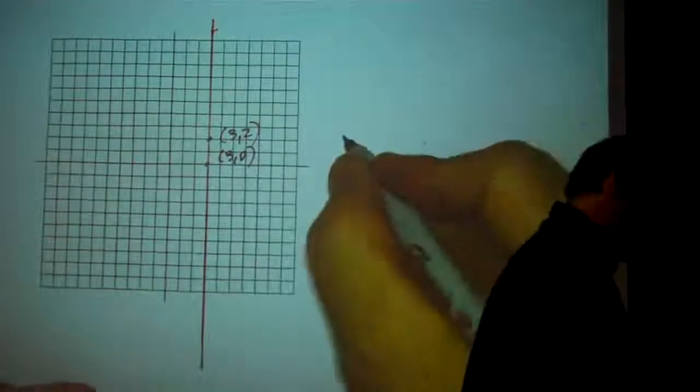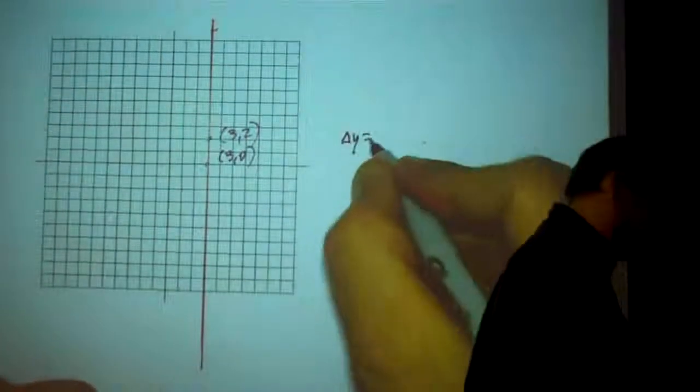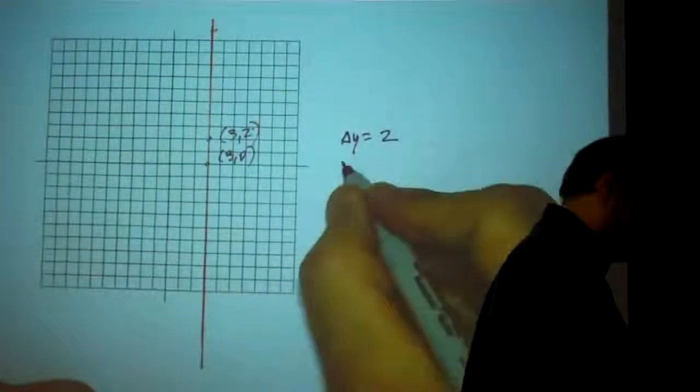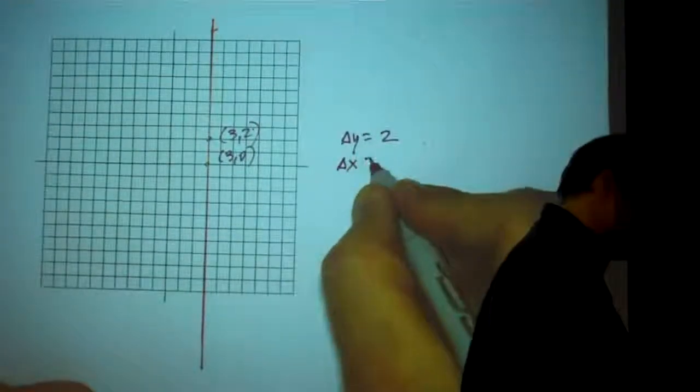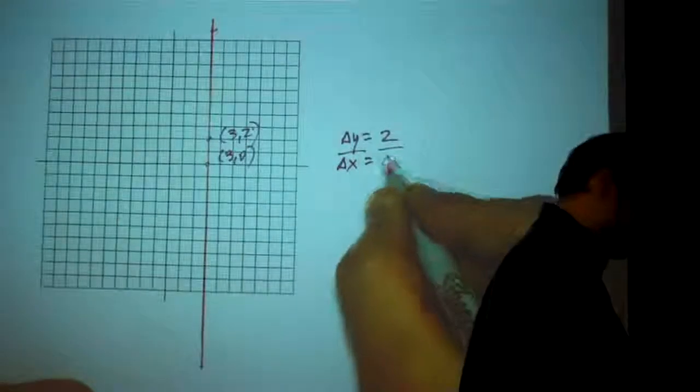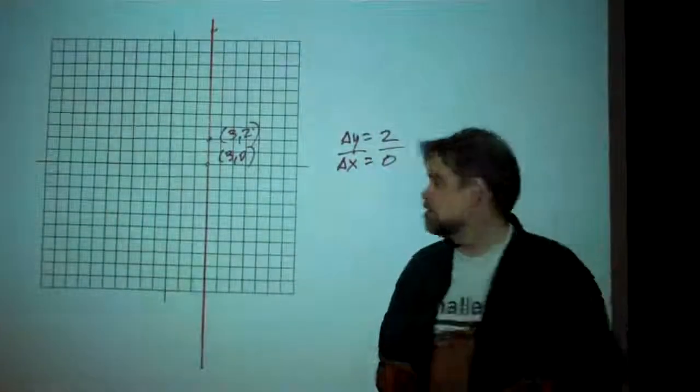Well, I see that my change in y is—went from 0 to 2—so the change in y is 2. And the change in x is, well, x didn't change, so it's 0. So we have 2 divided by 0.